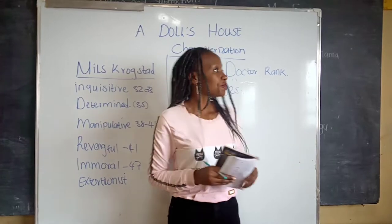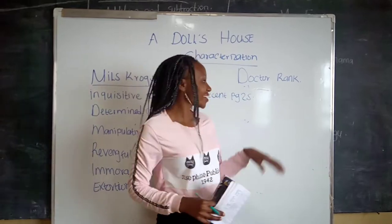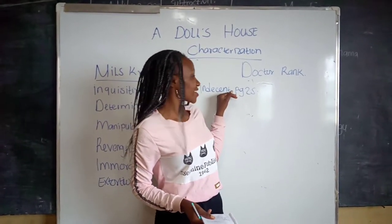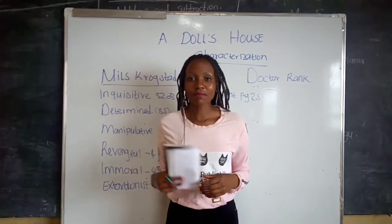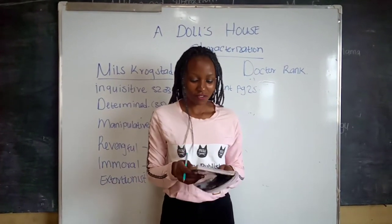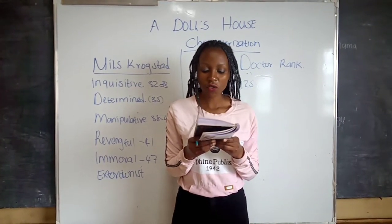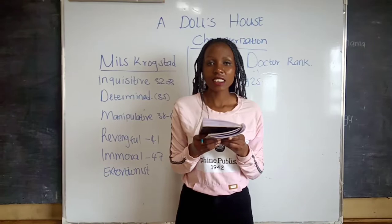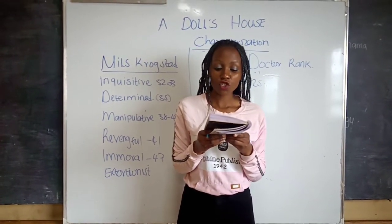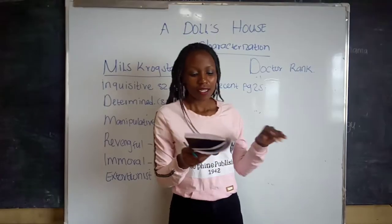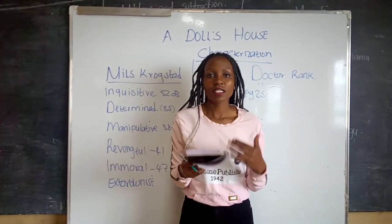We are moving to the last character, and this is Dr. Rank. I have one trait of Dr. Rank, and he is disdainful. That is on page 25. This is because he talks about Krogstad in a very unpleasant manner. On page 25, he is saying: 'A lawyer of the name of Krogstad, a fellow you don't know at all — he suffers from a diseased moral character, Mrs. Helmer. But even he began talking of it as being a highly important issue.' And on that basis, you can also say that Krogstad is immoral because Dr. Rank said so.